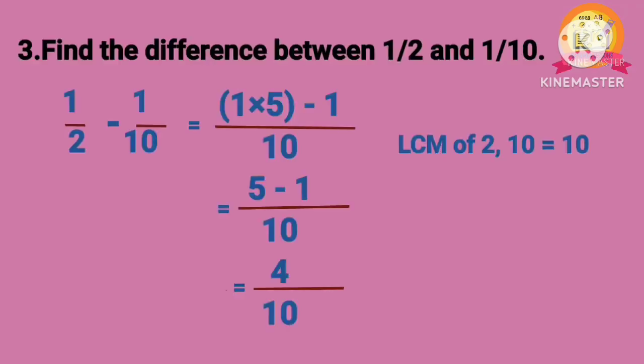Third problem: Find the difference between 1 by 2 and 1 by 10. That is 1 by 2 minus 1 by 10. LCM of 2 and 10 is 10. After subtraction, we get 4 by 10.